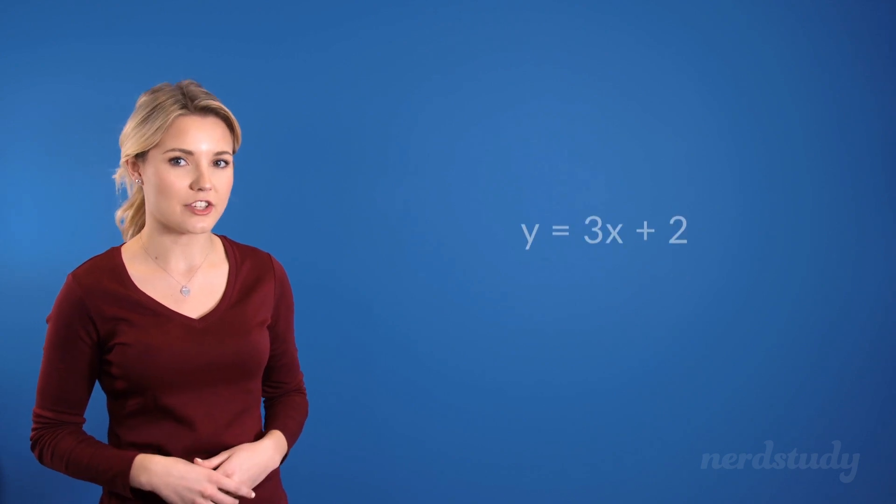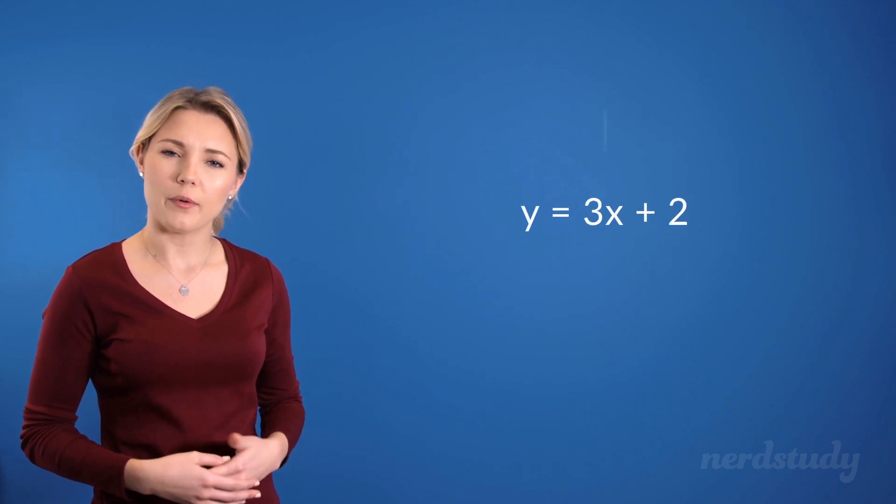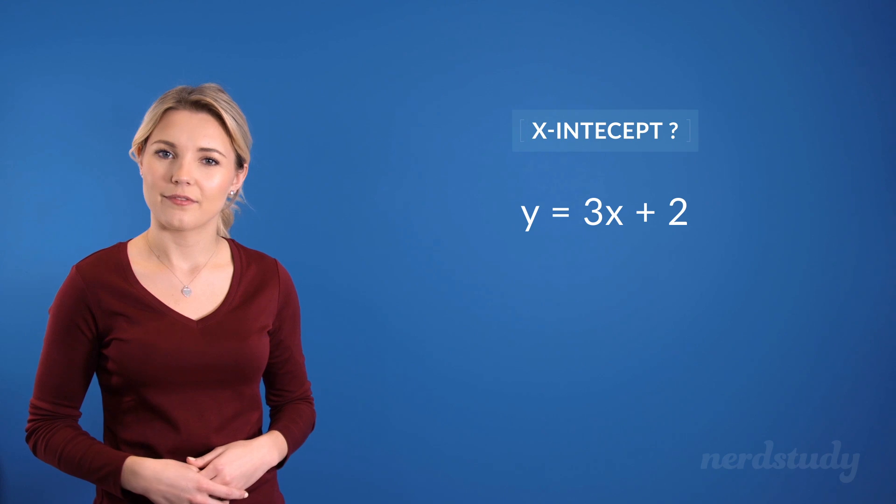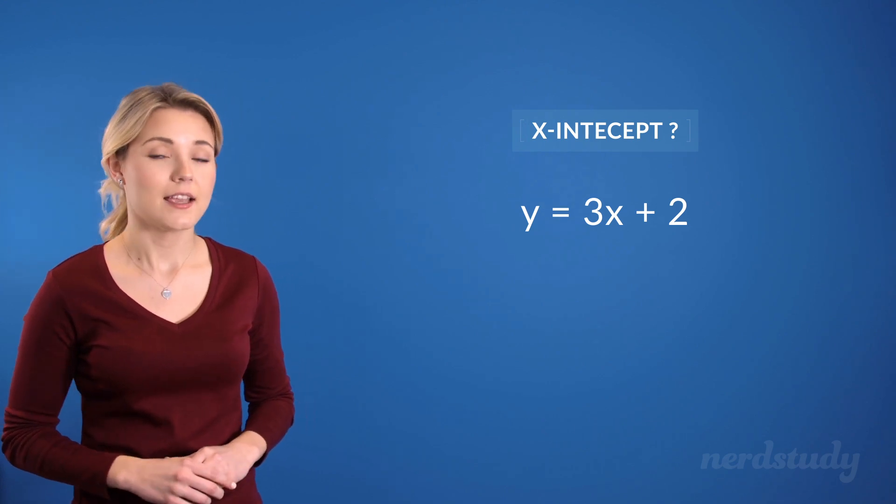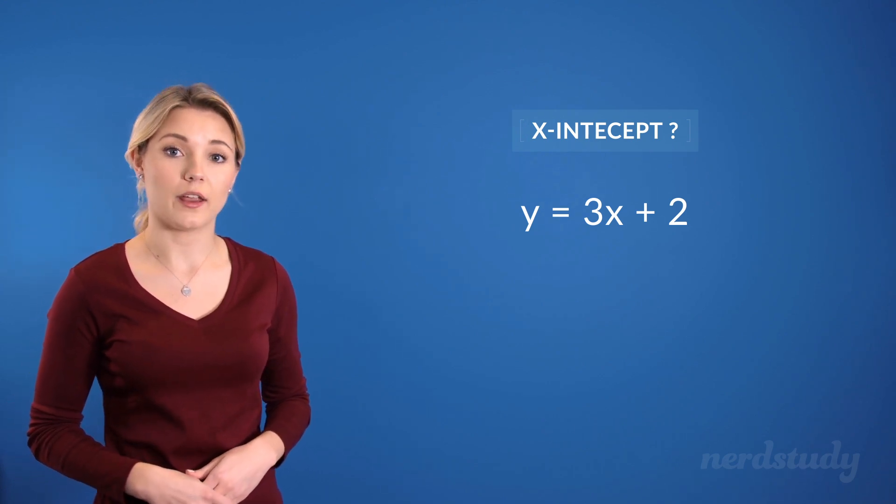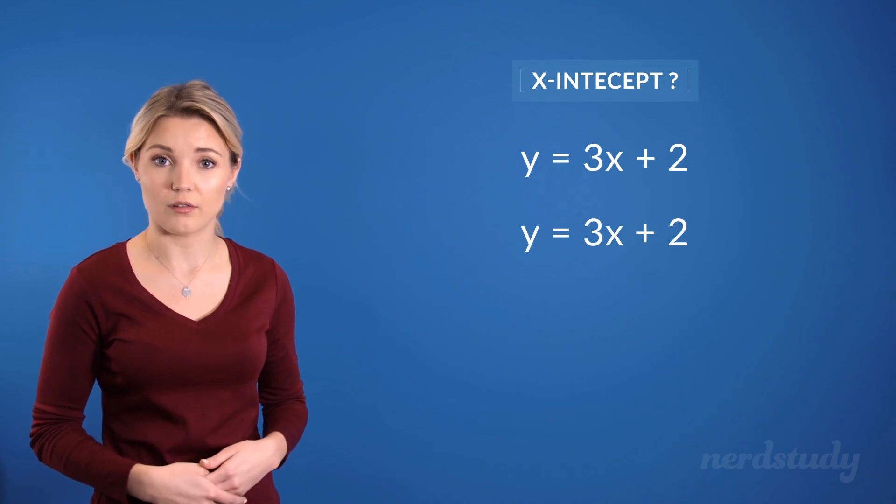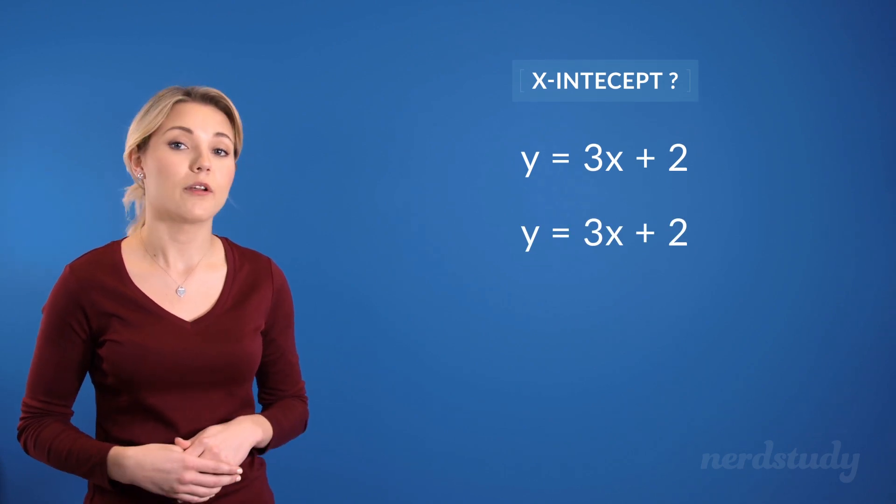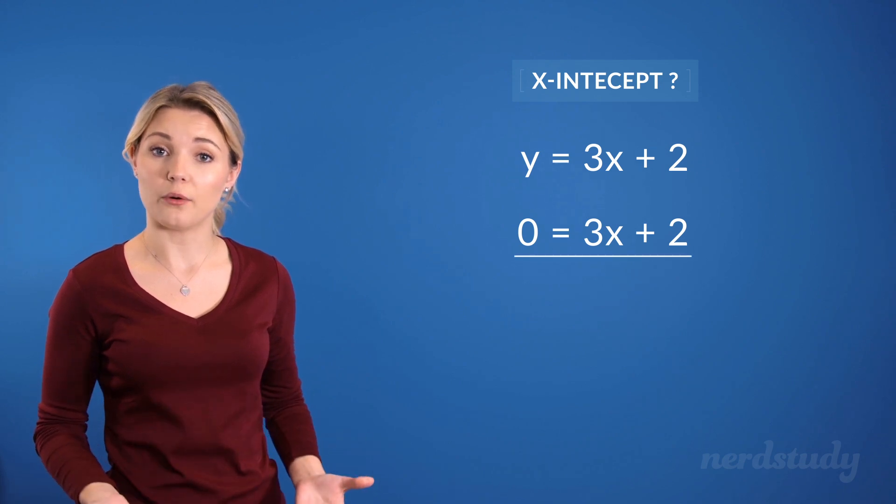So, if we have a linear equation like this one, what would the x-intercept be? Well, once again, the x-intercept is at a point where y is equal to 0. Therefore, we would plug 0 in for y, and we'd get the following.